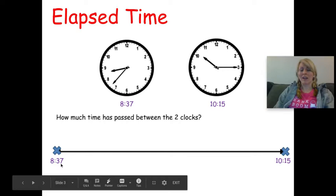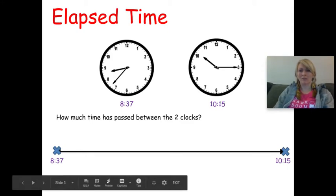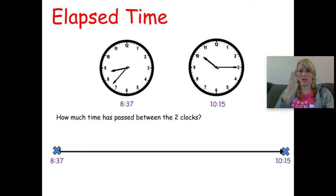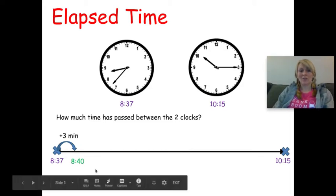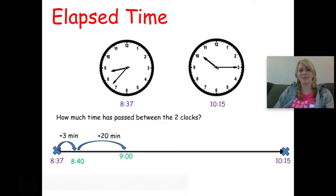I'm at eight thirty-seven and I ask myself: what would be a good jump to get to a friendly number? I'm thinking thirty-seven minutes is close to forty, so I jump three minutes — thirty-eight, thirty-nine, forty — and land at eight forty. Now from eight forty, how many more minutes to the next hour? Forty plus twenty makes sixty minutes, so I jump twenty minutes to reach nine o'clock. Then from nine to ten o'clock is one whole hour, so I add one hour and land at ten o'clock.